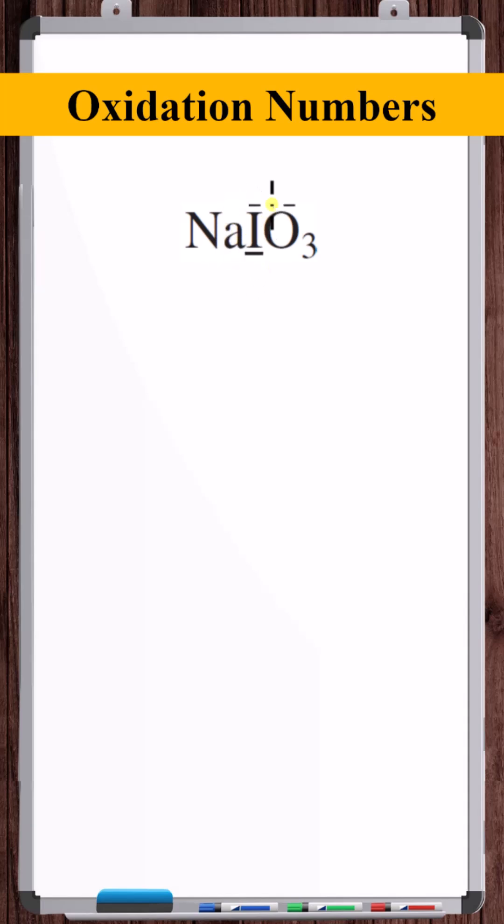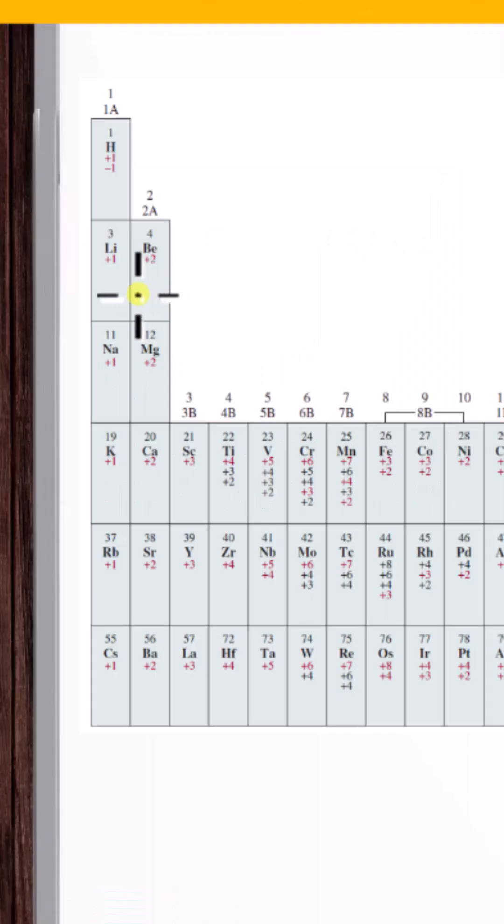Let's find the oxidation number of the iodine in this compound. The first thing we can notice is that there's an alkali metal here. Alkali metals are going to have an oxidation number of plus one, as this oxidation number chart shows.